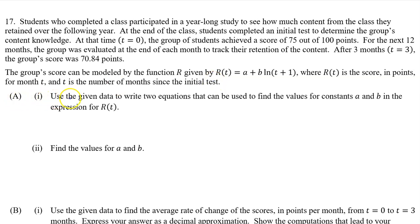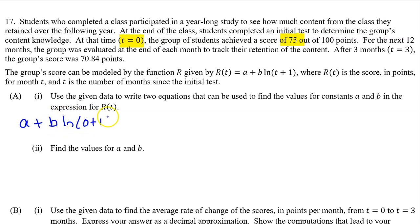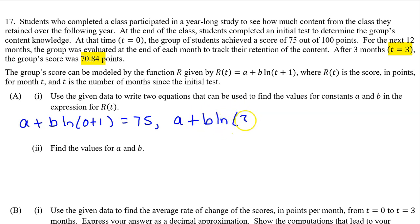Part A, part 1: Use the data to write two equations that can be used to find the values for constants a and b in the expression for r(t). Every input-output pair can be used to write an equation. Plugging in an input value of 0 gives us: a + b·ln(0+1) = 75. Similarly, the input-output pair t=3 and 70.84 gives us: a + b·ln(3+1) = 70.84.